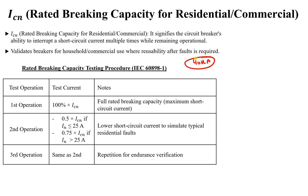The first test applies 100% of the fault current — 100% of 40 kilo-ampere in this example. This represents the maximum possible short circuit current, which is the ICN rating for the breaker. The second test applies 50% of this value if the rated breaker current In is less than or equal to 25 ampere, or 0.75 of the short circuit value if In is greater than 25 ampere.